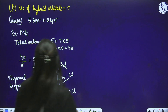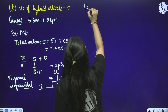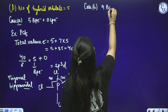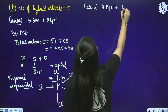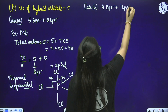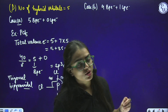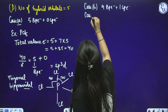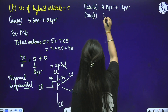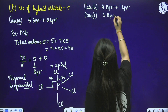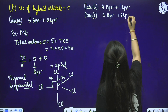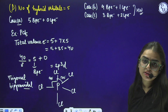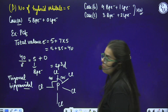For case B: 4 bond pair and 1 lone pair — I want you all to try by your own. Tell its shape and geometry in the comment section. Case C: 3 bond pair and 2 lone pair — this is also your homework. For these two cases, tell me the shape, geometry, and example.